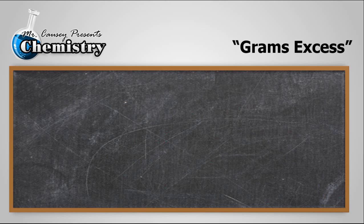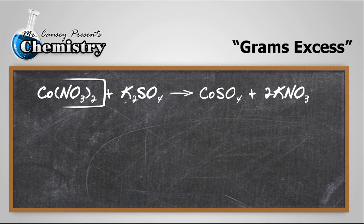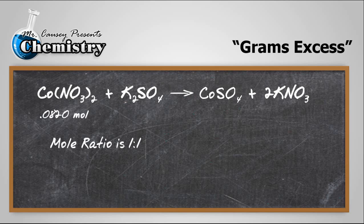Now let's find out the grams of excess. Cobalt 2 nitrate is our limiting reactant, so potassium sulfate is going to be our excess reactant. We have 0.0820 moles of cobalt 2 nitrate. The mole ratio is 1 to 1, which means we can only use 0.0820 moles of potassium sulfate. We're going to use the same number of moles of potassium sulfate as we are cobalt 2 nitrate.